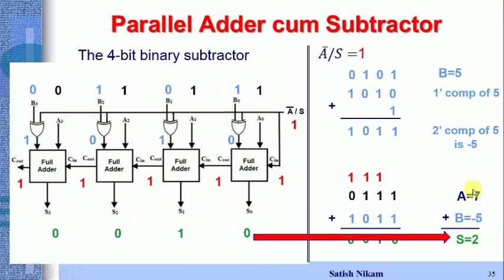Checking the output: S = 0010 = 2, which is the correct result of 7 minus 5. This confirms the circuit works correctly as a subtractor. This completes the designing of the parallel adder-subtractor circuit. Thank you.